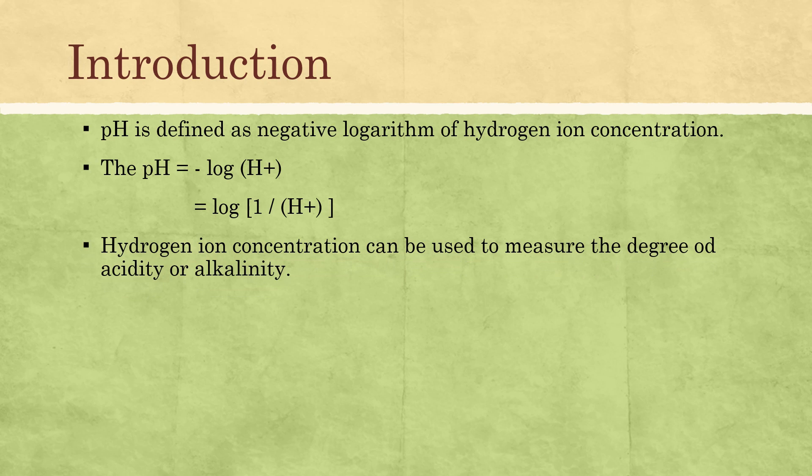The Hydrogen-Ion Concentration can be used to measure the degree of acidity and alkalinity. When we consider microorganisms, they require a growth media for their growth, and each growth media has its own specific pH. The pH of these media is measured by measuring the degree of acidity and alkalinity, and this measurement is done using Hydrogen-Ion Concentration.